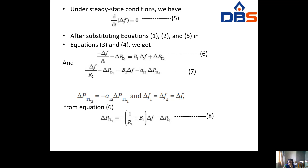Under steady state condition, d/dt of delta F equals zero. Substituting equations 1, 2 into equations 3 and 4, we get: minus delta F by R1 minus delta PD1 equals B1 into delta F plus delta PTL1 (equation 5), and minus delta F by R2 minus delta PD2 equals B2 into delta F minus delta PTL1 (equation 7). Also, delta PTL2 equals minus A12 times delta PTL1, and delta F1 equals delta F2 equals delta F.